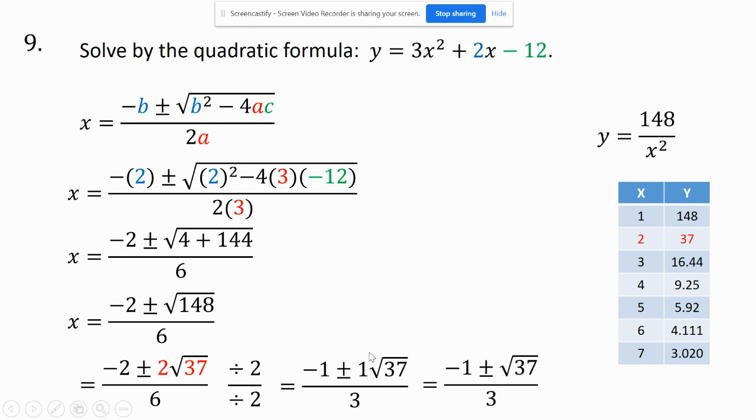So your answer would look like this here. These would be my x values, negative 1 plus or minus the square root of 37 divided by 3. And my axis of symmetry would be at x equals negative 1 third. Always is these numbers here.